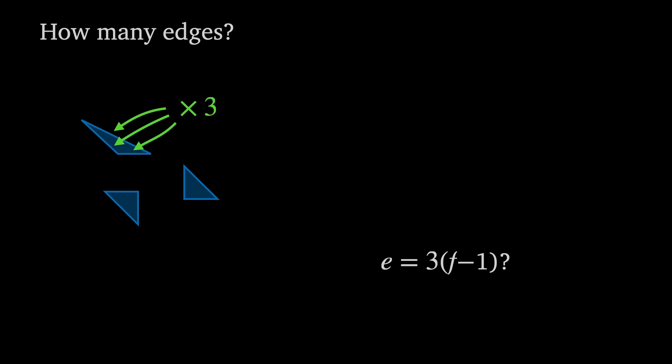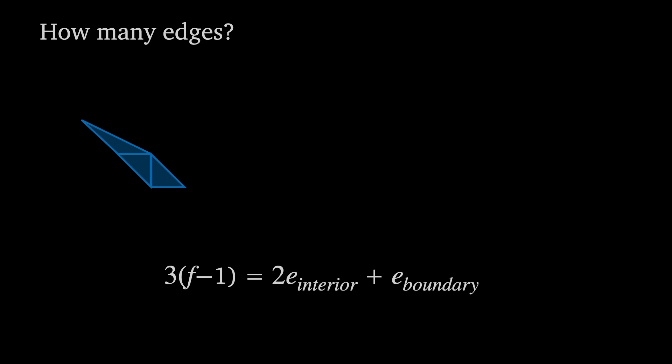But as we put the polygon back together again, we find we've counted those edges on the interior twice. So the actual equation which relates faces and edges is three f minus one equals two times the number of interior edges plus the number of boundary edges. So from here we just need to go through some algebra to get to Pick's theorem.